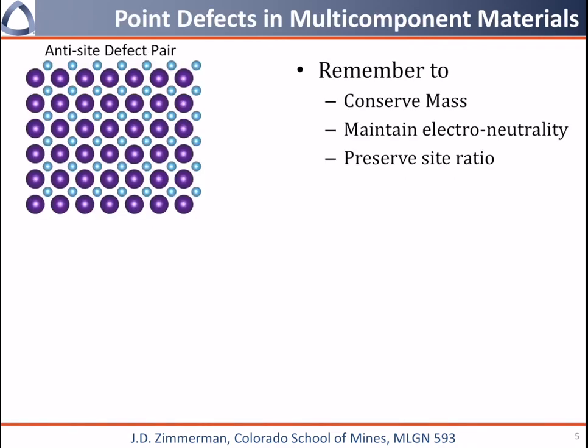Now I want to talk about point defects in multi-component materials. We're going to remember to conserve mass, electroneutrality, and site ratios. The first one is an anti-site defect pair. An anti-site is simply an anion on a cation site or a cation on an anion site. So we've taken an anion and a cation and flipped them into opposite locations, done as a pair to make sure we've followed all of our rules.